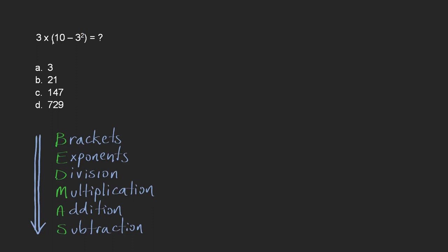In this question we're asked to evaluate the expression 3 × (10 - 3²). So we have multiplication, we have brackets, we have subtraction, and we have an exponent.